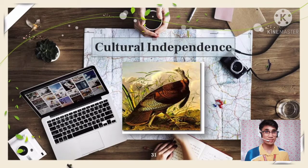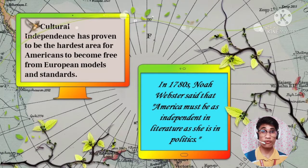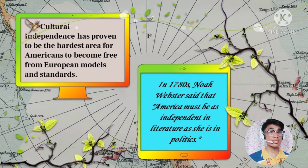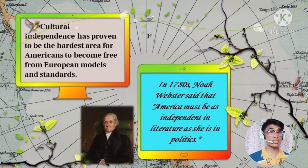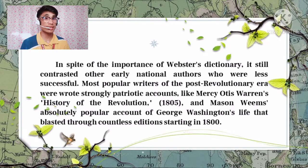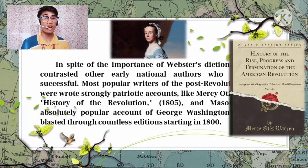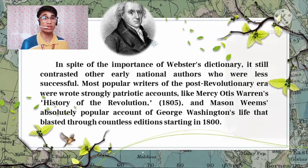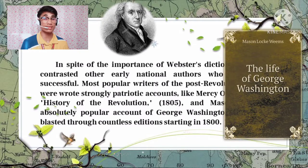Let us now talk about cultural independence. Cultural independence has proven to be the hardest area for Americans to become free from European models and standards. Many American artists and intellectuals recognized the need for American cultural independence. In the 1780s, Noah Webster said that America must be as independent in literature as it is in politics. His main contribution came through an immensely influential spelling book to standardize the American language. Despite the importance of Webster's work, most popular writers of the post-revolutionary era wrote strongly patriotic accounts, like Mercy Otis Warren's History of the Revolution in 1805, and Mason Weems's popular account of George Washington's life, which went through countless editions starting in 1800.